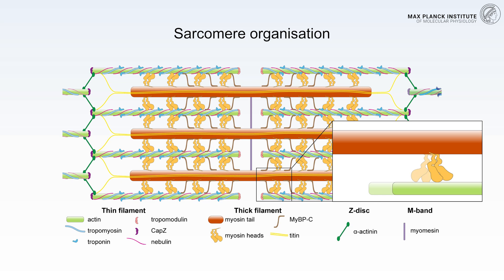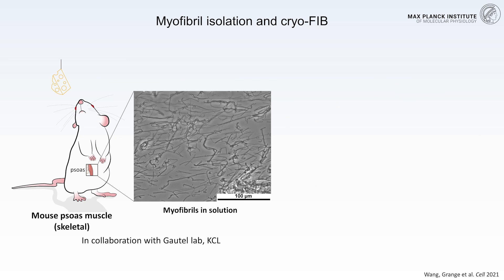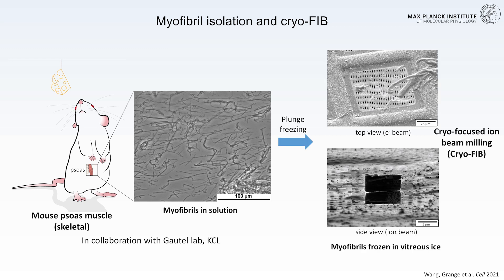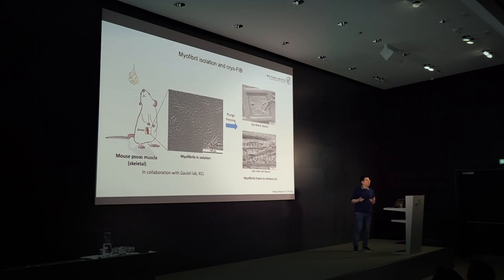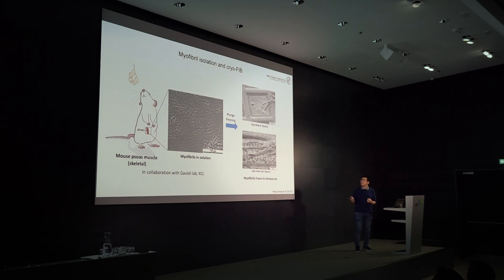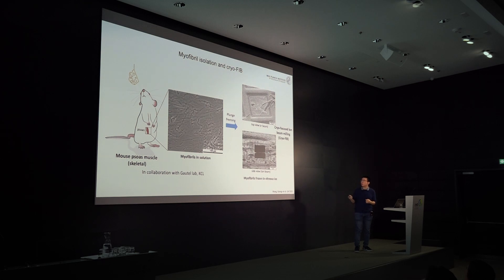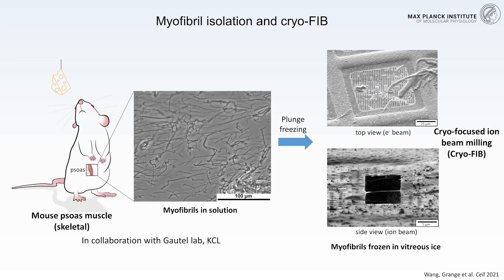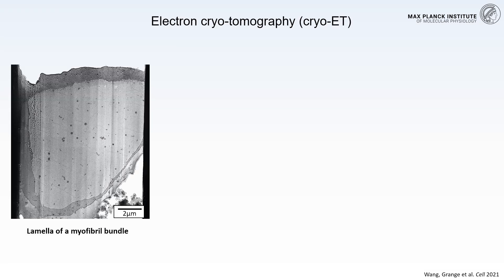To achieve this, we started from muscle samples from a native source, in collaboration with Matthias Gautel's lab at King's College London, where they isolated myosin directly from mouse skeletal muscle. We then plunge-froze these myosin samples on an electron microscopy grid. At this stage, the muscle sample cannot be imaged yet because it is simply too thick to be penetrated by an electron beam. What we use is a technique called focused ion beam milling, or cryo-FIB milling, which blasts away most of the myofibril and creates a very thin slice — a lamella — about 100 nanometers thick.